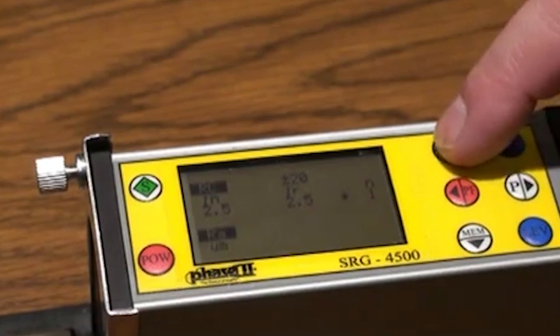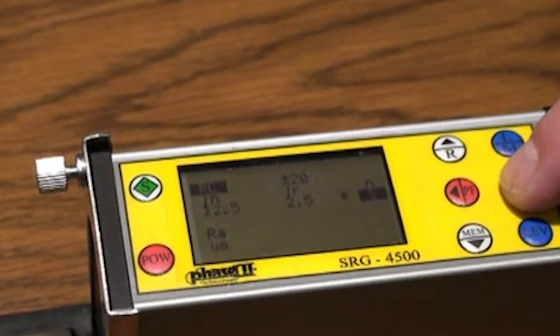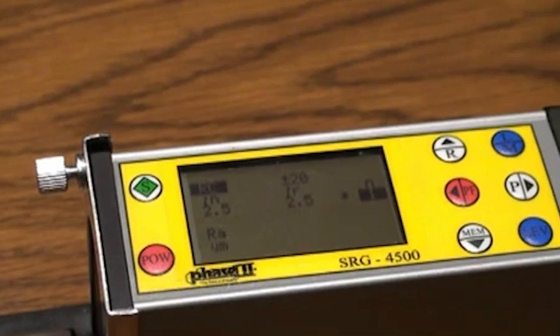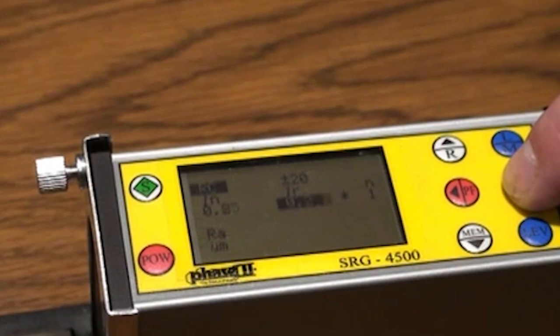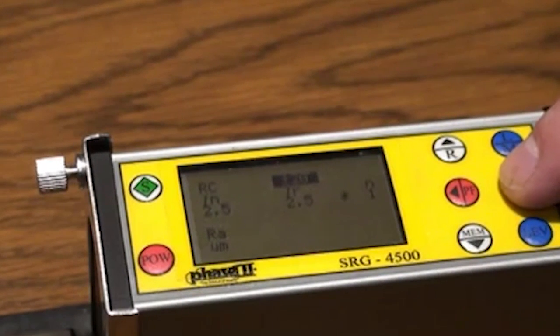Traverse length setting, which is the amount of consecutive cutoff lengths to be evaluated in a given test. Cutoff length, which is the sampling length of the test. The correct value is determined by approximate surface roughness. This can be referenced in a chart in the operation manual, showing various ranges. And finally, range of tests. Pressing the LM button once will bring you quickly back to the main test screen.